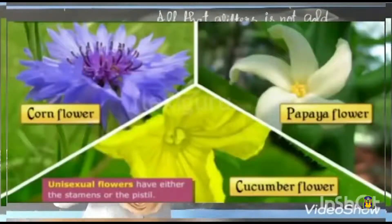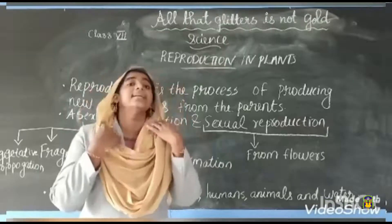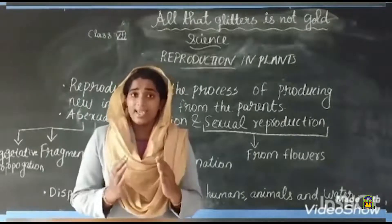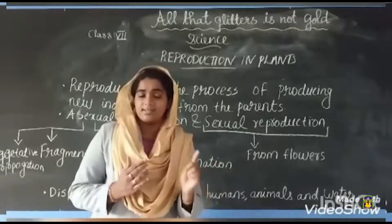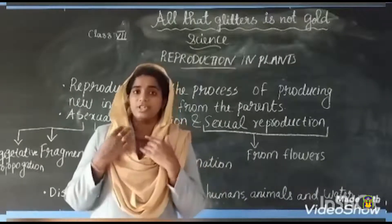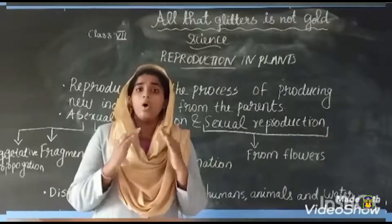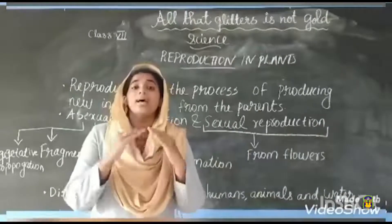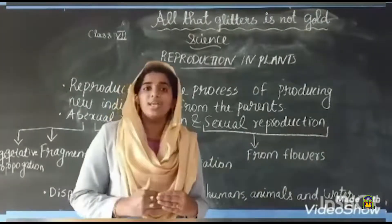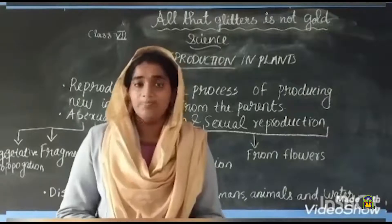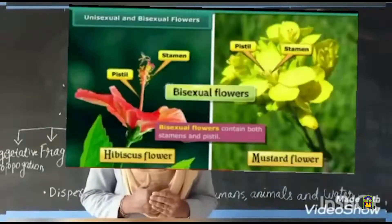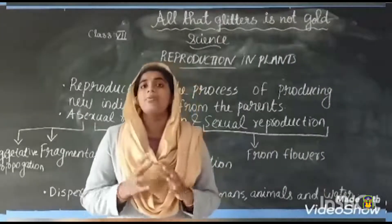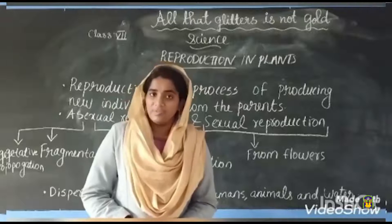We discussed about unisexual and bisexual flowers. Flowers that contain either only the stamen — the male reproductive part — or only the pistil — the female reproductive part — are called unisexual flowers. Flowers that contain both stamen and pistil are called bisexual flowers.